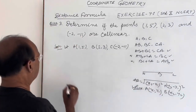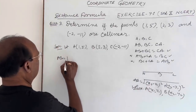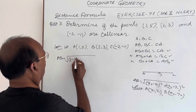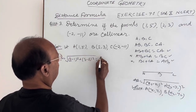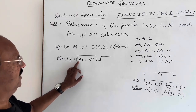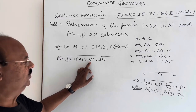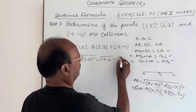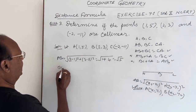Now we find length AB using the distance formula: AB = √[(2 − 1)² + (3 − 5)²] = √[1² + (−2)²] = √[1 + 4] = √5.